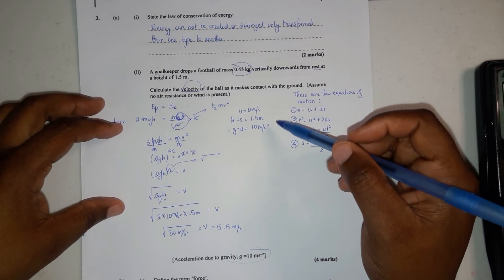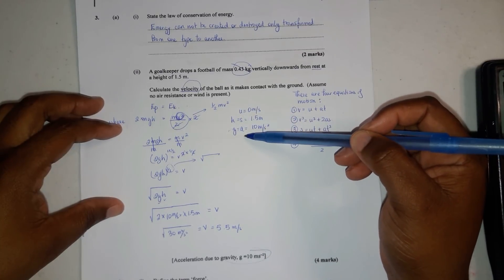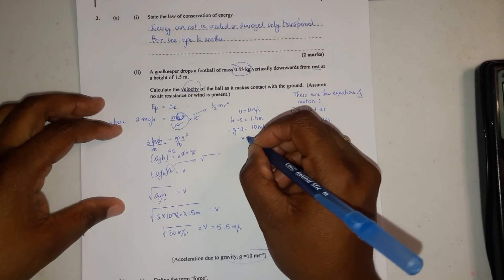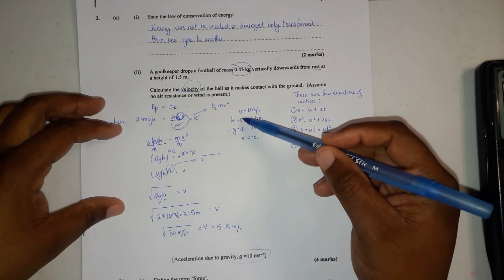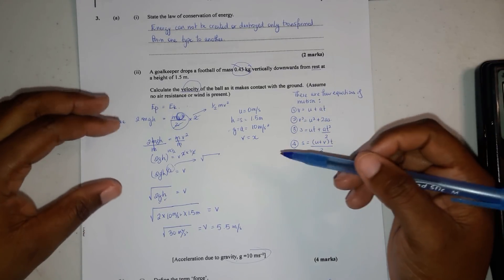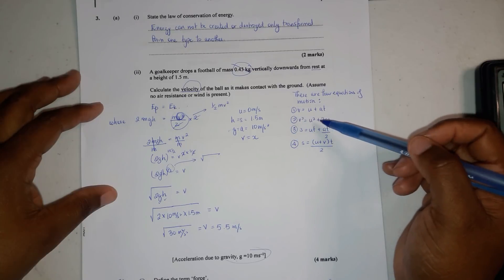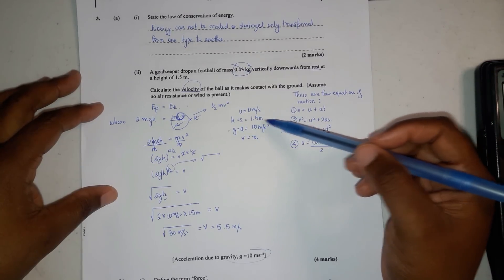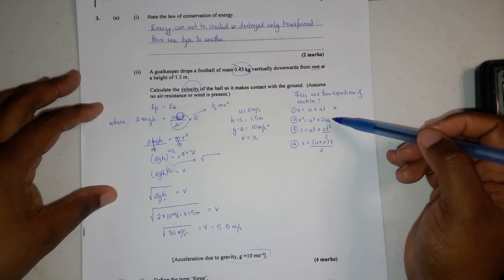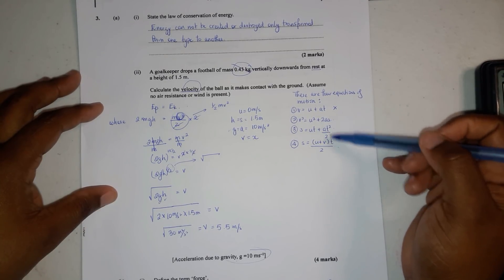You want to look for things that you have. You have u, s, and a, and you're looking for final velocity v. We have u in all of these, so we can't eliminate any yet. Do we have s? s is not in equation 1, so eliminate that. We have s in 2, 3, and 4. Do we have a? We have a in 2 and 3, so eliminate 4.